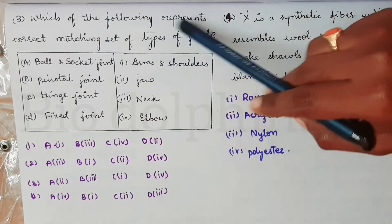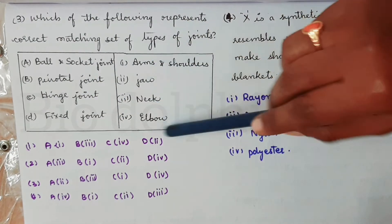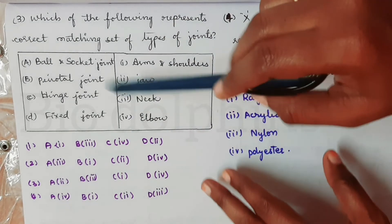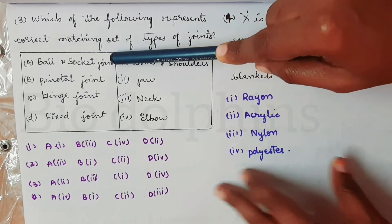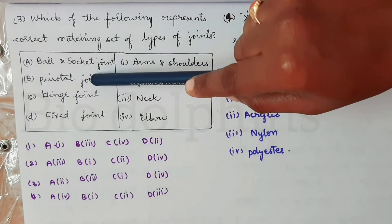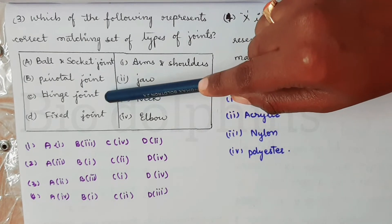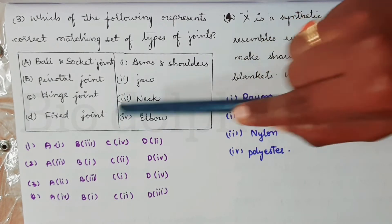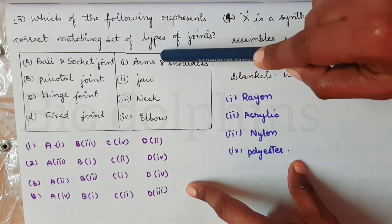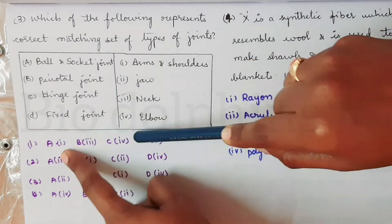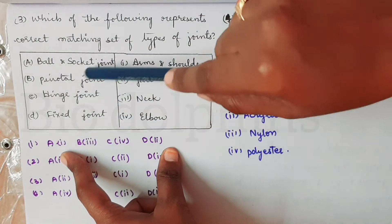Next question asks which of the following represents correct matching sets of types of joints. The ball and socket joint is at the shoulder; the pivotal joint is at the neck; the hinge joint is at the elbow; and the fixed joint is at the jaw. The correct answer is option 1.